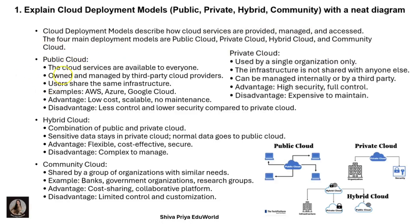Public cloud means the best example is a government bus — anyone can enter and use it. Cloud services are available to everyone and owned and managed by third-party cloud providers; users share the same infrastructure. For example, AWS, Azure, and Google Cloud are all examples of public cloud. Advantages: low cost, scalable, and no maintenance. Disadvantages: less control and low security.